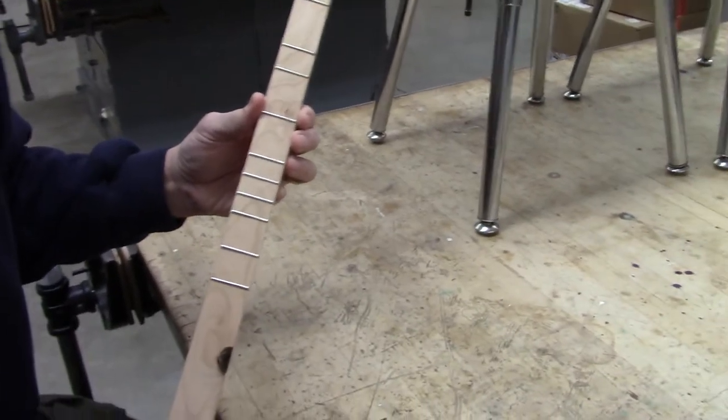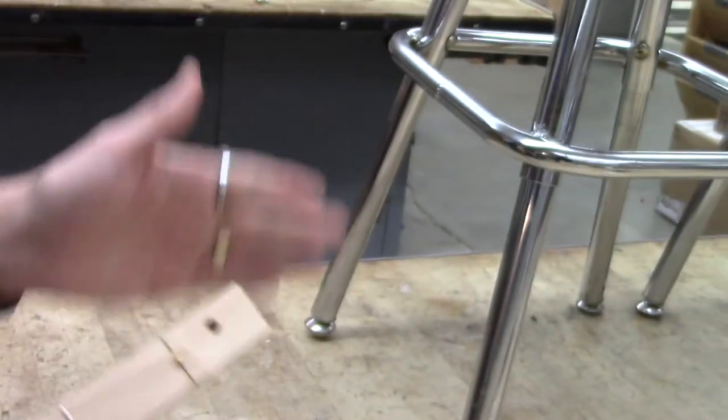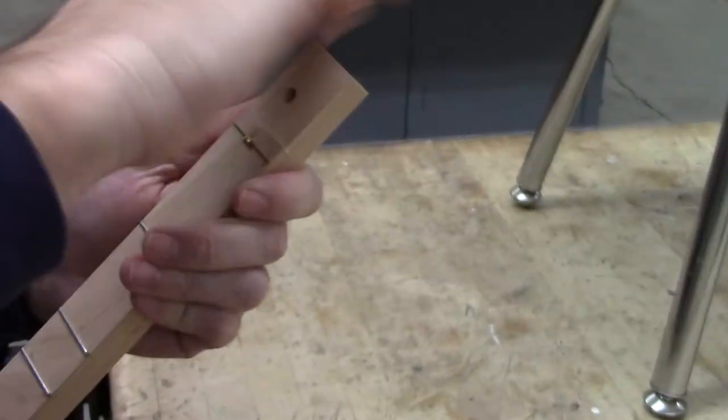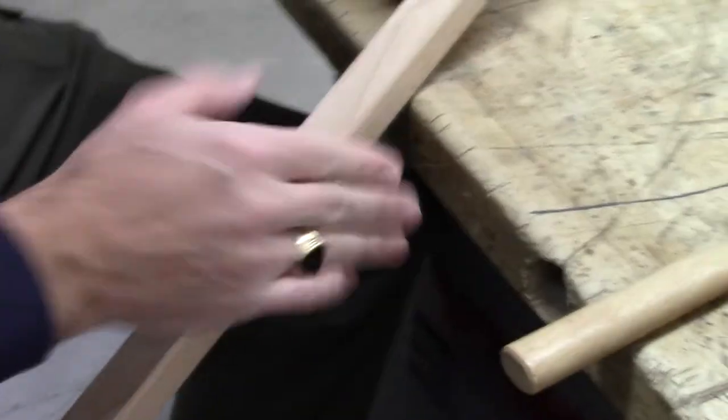But for right now, I want you to start working on the wood. You should round the top of that. So, you know, if you bump into it, it doesn't hurt. So that should be rolled. And then these corners should really be rolled.